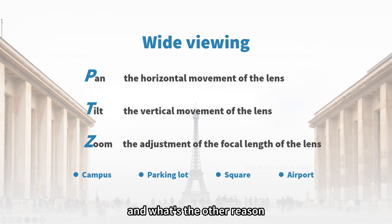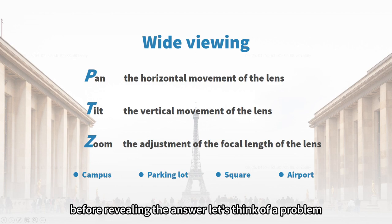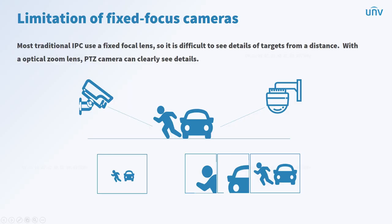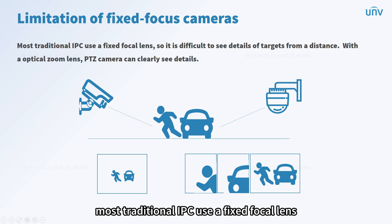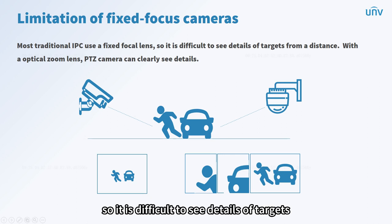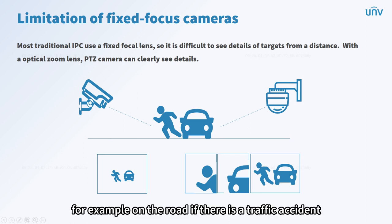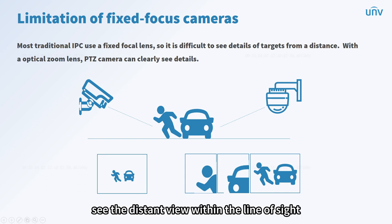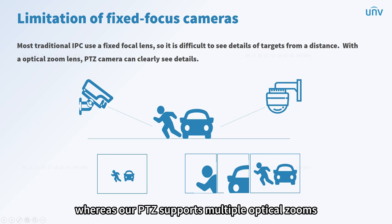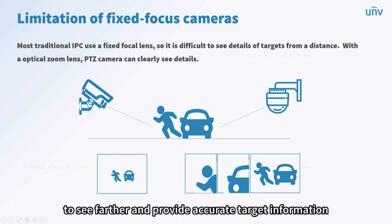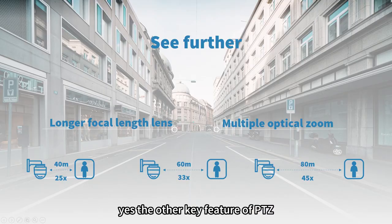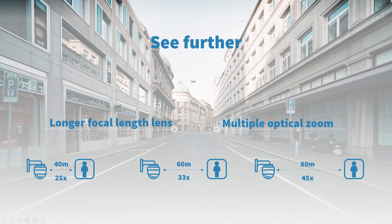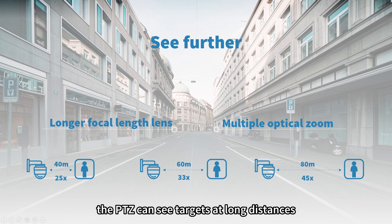And what's the other reason? Most traditional IPCs use a fixed focal lens, so it is difficult to see details of targets from a distance. For example, on the road, if there is a traffic accident, the fixed focus IPC can only see the distant view within the line of sight and cannot capture the details. Whereas our PTZ supports multiple optical zooms to see farther and provide accurate target information. The other key feature of PTZ is exactly that it can see further — by equipping it with different zoom lenses, the PTZ can see targets at long distances.